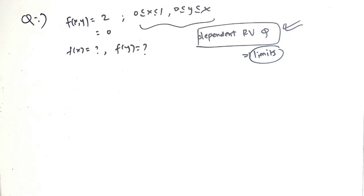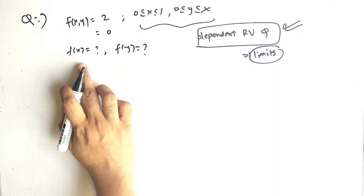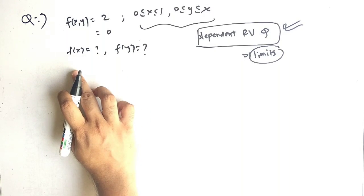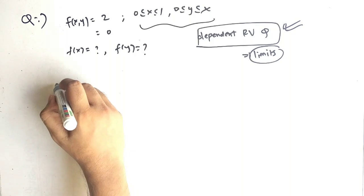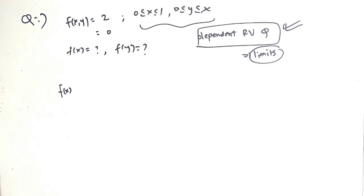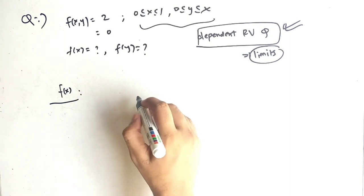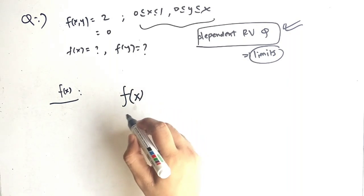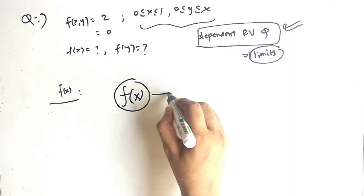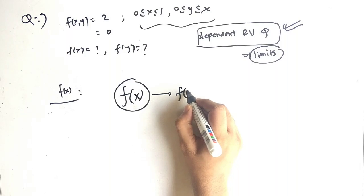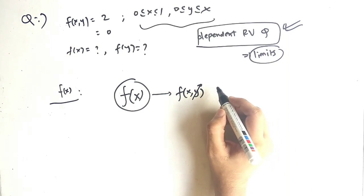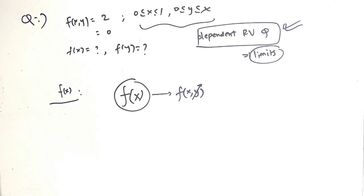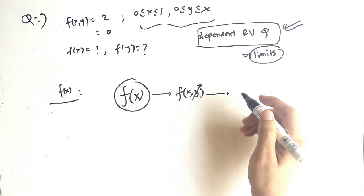We have to find small f of x, which is also known as the marginal PDF — probability density function. To find small f of x, we use small f of x comma y and eliminate y. That will give us small f of x. But how do we eliminate y?